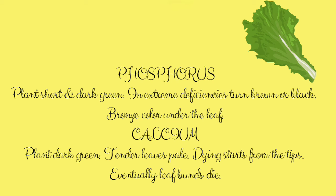In case of calcium deficiency, plants will be dark green, tender leaves will be very pale, and drying starts from the tips of the leaves, eventually causing the leaf buds to die together.